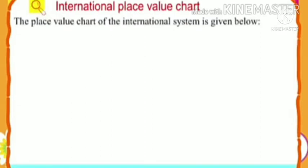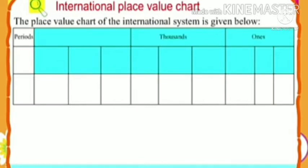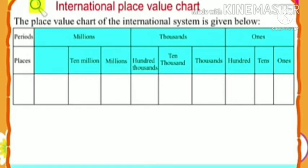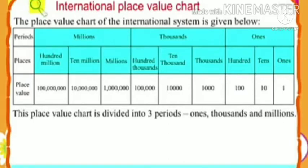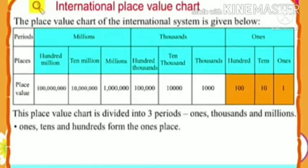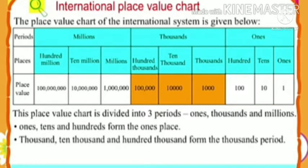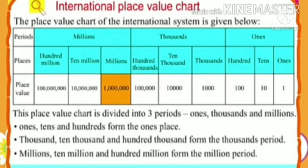Now, the international place value chart. The place value chart of the international system has three periods: Ones, Thousands, and Millions. The Ones period has Ones, Tens, Hundreds. The Thousands period has One Thousand, Ten Thousand, Hundred Thousand. The Millions period has One Million, Ten Millions, and Hundred Millions.